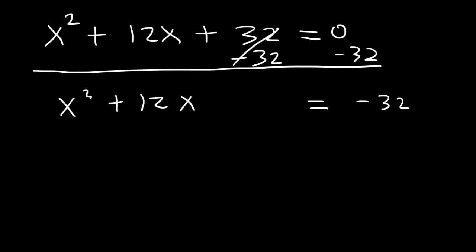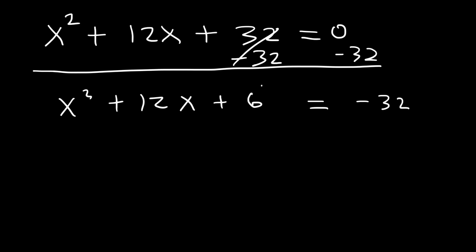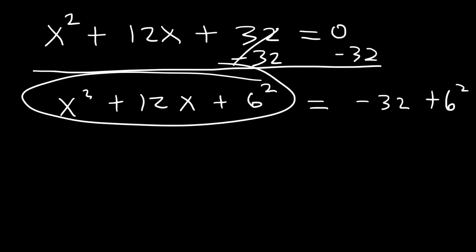So now we'll need to complete the square. To do this, look at the middle coefficient — the number in front of x. Divide 12 by 2: half of 12 is 6, and then you want to square it. So you want to add 6 squared to both sides. On the left side I'm going to leave it as 6 squared, because there's a nice and simple technique that you can use to factor this expression.